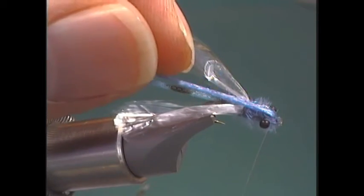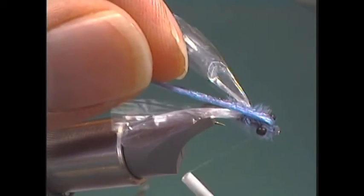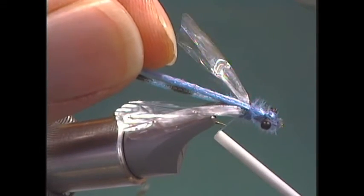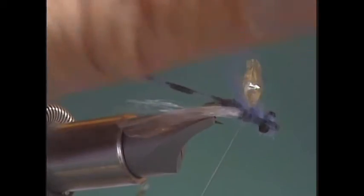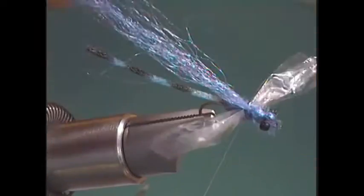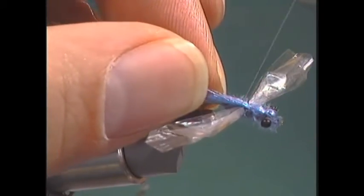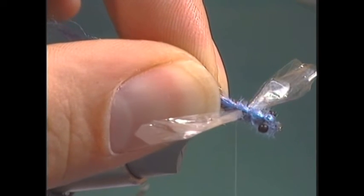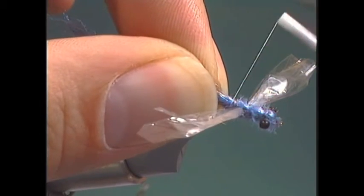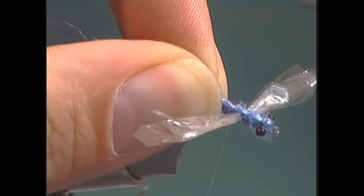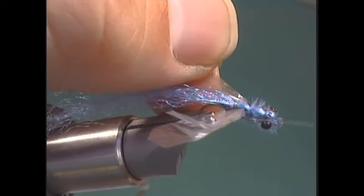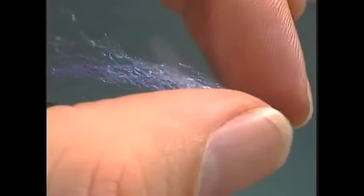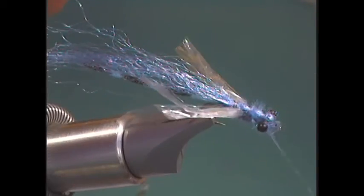Then we're going to pull our wing case of blue Zeelon over. Take a turn right behind the eye. One turn right in front of the wing. Pull the wings up out of the way a little bit. Then we'll take a couple turns right behind the wing. Usually I take four to five wraps right here, all in one place. I'll come back with the thread right in front of the wing, right behind the eye, then right up to the eye of the hook.